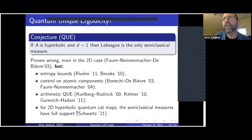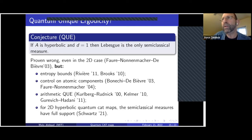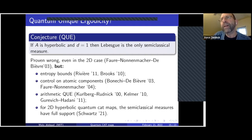Question from audience: What is the relation between the full support theorems and saying that you have to have a Lebesgue component — like half the Lebesgue measure plus half a singular measure, as in the Faure-Nonnenmacher-De Bièvre counter-example? What is the relation between the full support result and having a positive constant times the Lebesgue measure as a component of the limit measures?